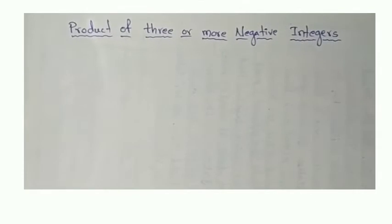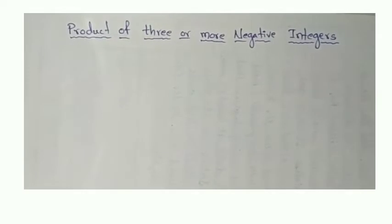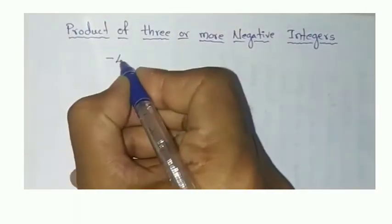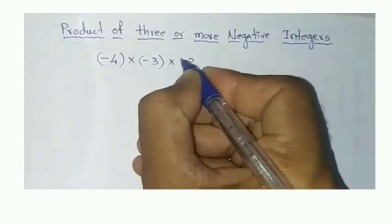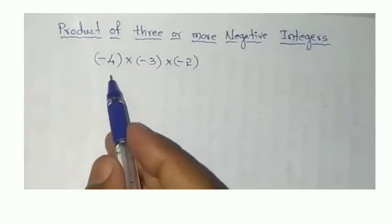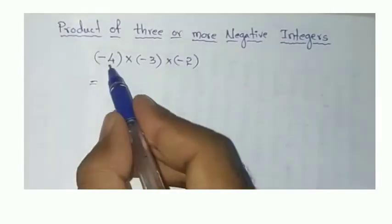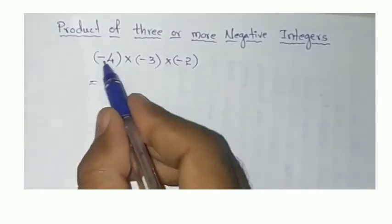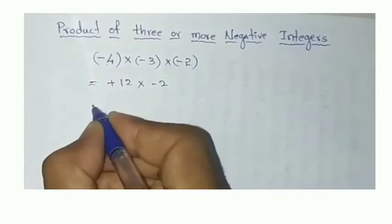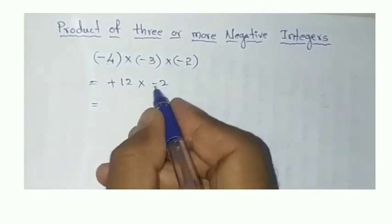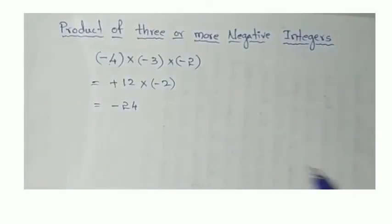Let's understand product of negative integers — how to take the signs. Let's take 3 or more terms. One example: minus 4 into minus 3 into minus 2. How to multiply? Product means multiplication. First, we multiply the first two numbers: minus 4 into minus 3 — minus into minus is plus, 4 times 3 is 12. Again, here plus into minus is minus, times 2 — total is minus 24.